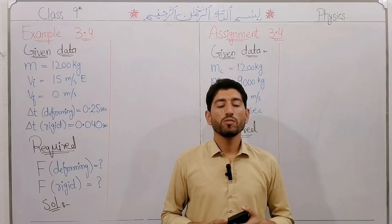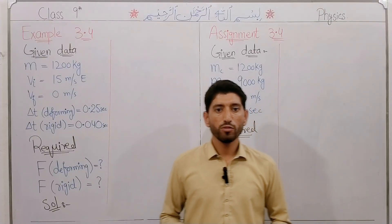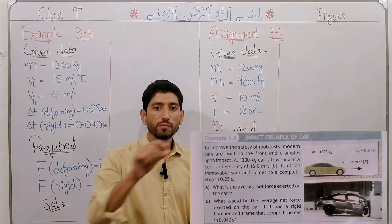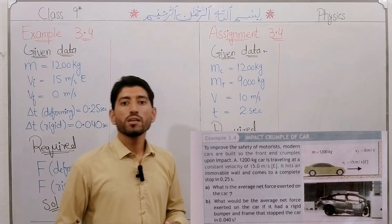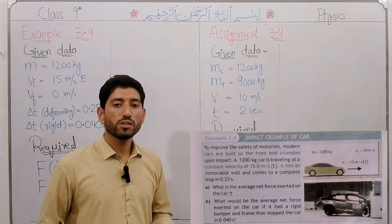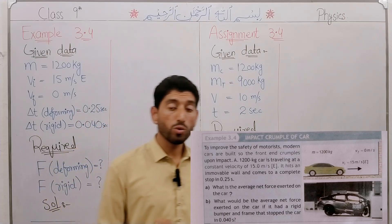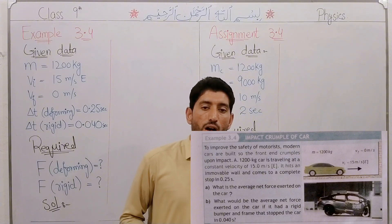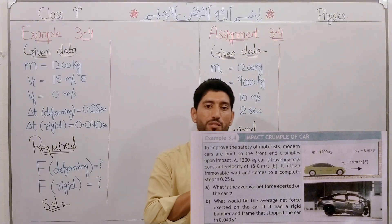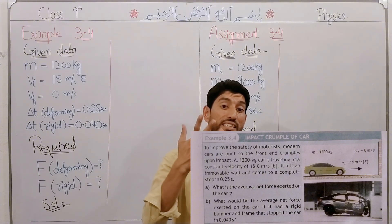Assalamualaikum. We are going to discuss Example 3.4 and Assignment 3.4. We have a motor car that is 1200 kg. The motor car is moving at 15 meters per second towards east.